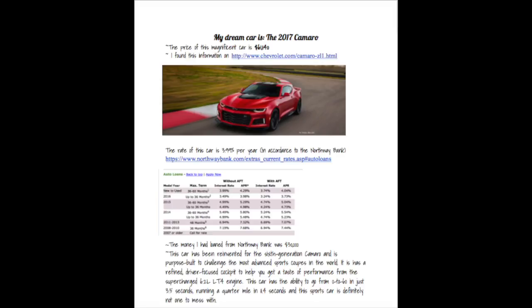I have a little paragraph about this car. This car has been reinvented for the 6th generation Camaro and is purpose-built to challenge the most advanced sports coupes in the world. It has a refined, driver-focused cockpit to help you get a taste of performance from the supercharged 6.2L L24 engine. This car has the ability to go from 0-60 in just 3.5 seconds, running a quarter mile in 11.4 seconds. And this sports car is definitely not one to mess with.